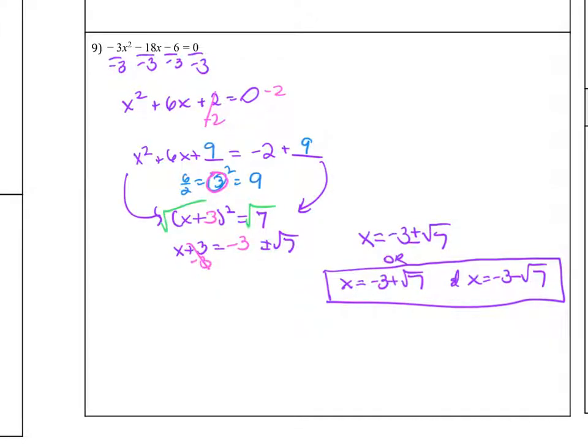Okay, if you tried this out, you divided everything by negative 3. When you did that, you would get x squared plus 6x and then plus 2.